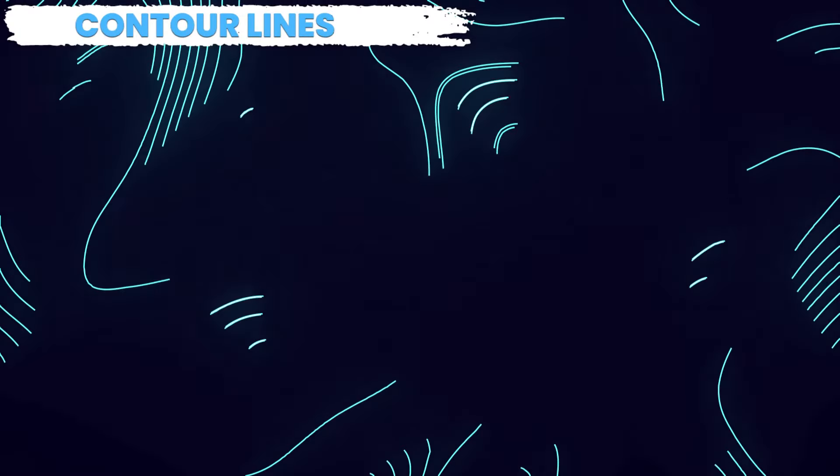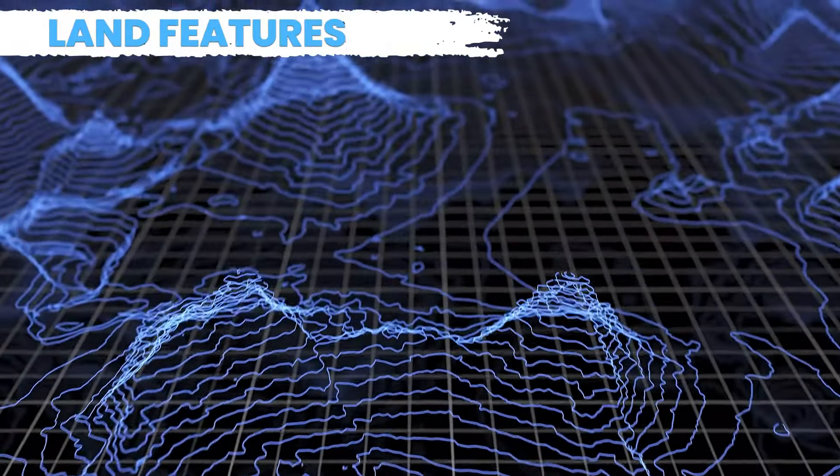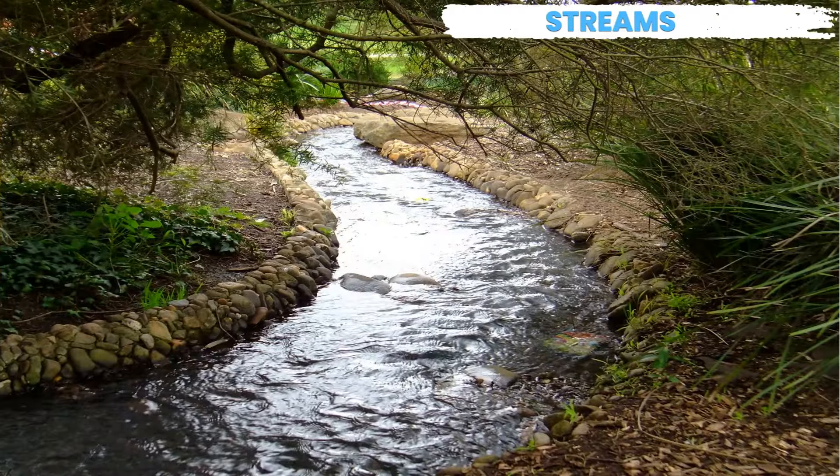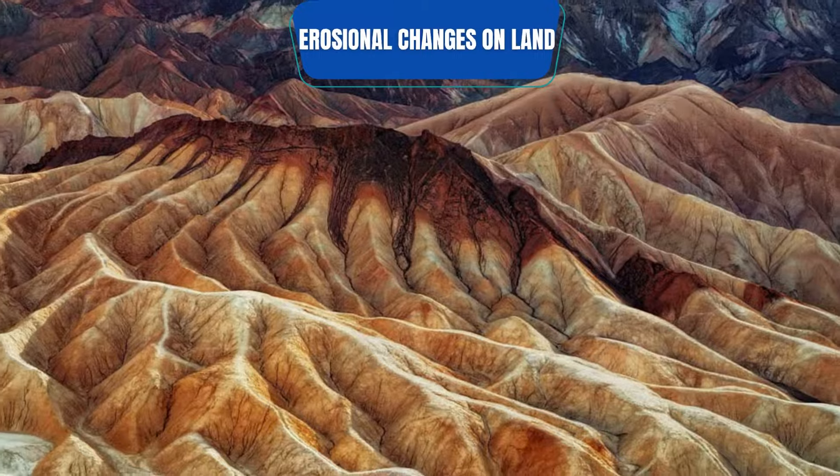Topographic maps use contour lines to show different elevations of the land, and the patterns of the contour lines reveal different land features. For example, hills, streams, valleys, and basins. These patterns highlight the erosional changes on the land.